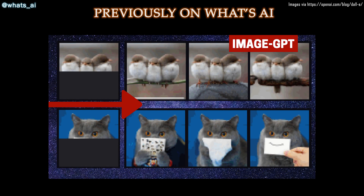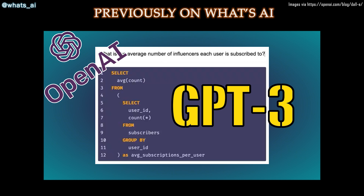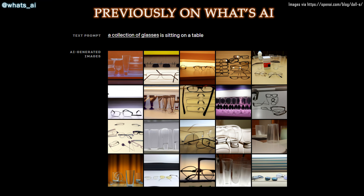It's a continuation of ImageGPT and GPT-3 that I both covered in previous videos. DALL-E is very similar to GPT-3 in the way that it's also a transformer language model, receiving text and images as inputs to output a final transformed image in many forms.